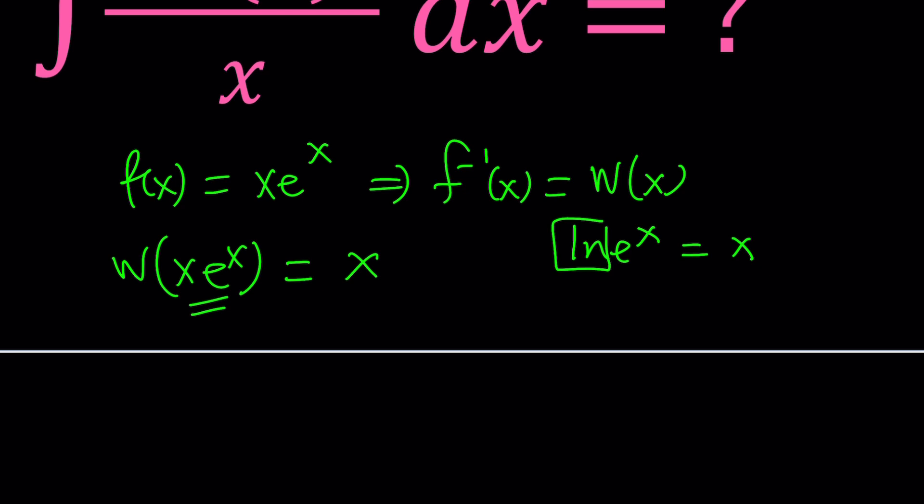That turns the product into the argument. So we could also write this in a couple different ways. For example, if you take W of x multiplied by e to the W of x, this is also equal to x.